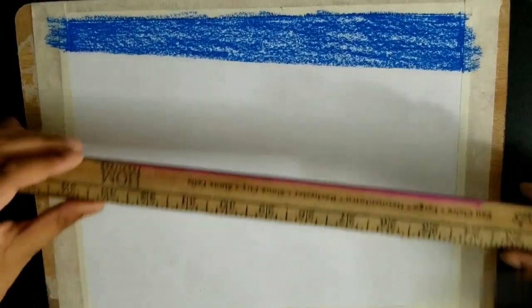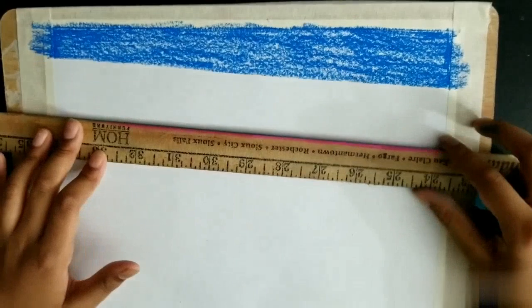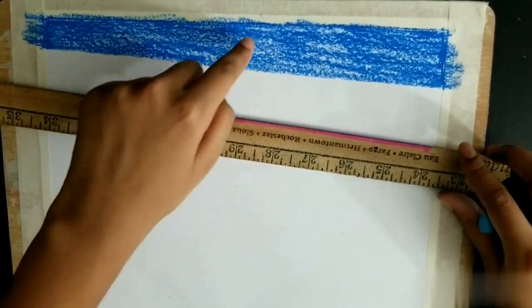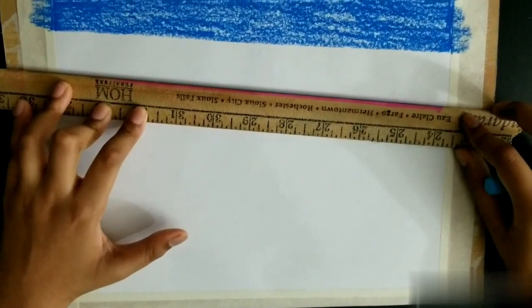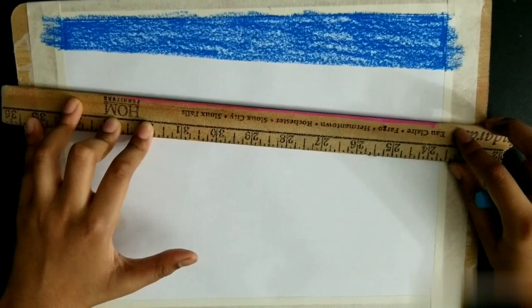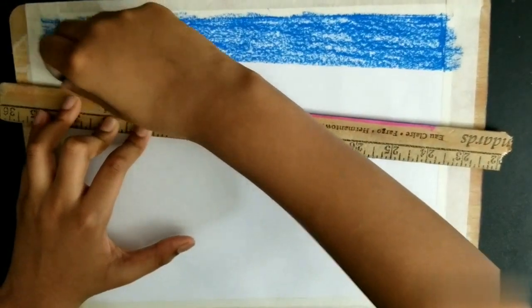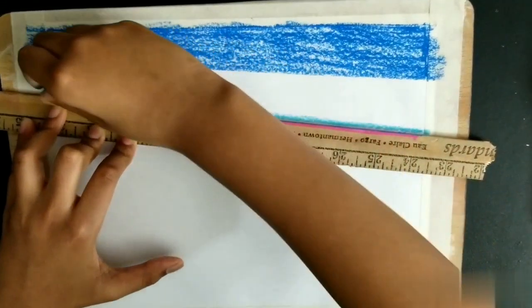After you color it in, now we need our ruler and light blue. It's the same thing we just did on the top, a little slant like that, a little bit, and color it in.